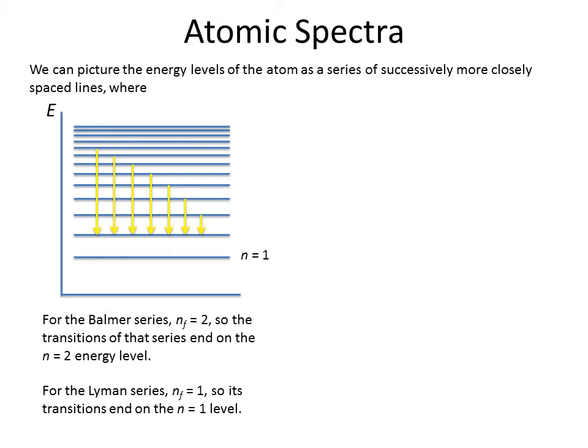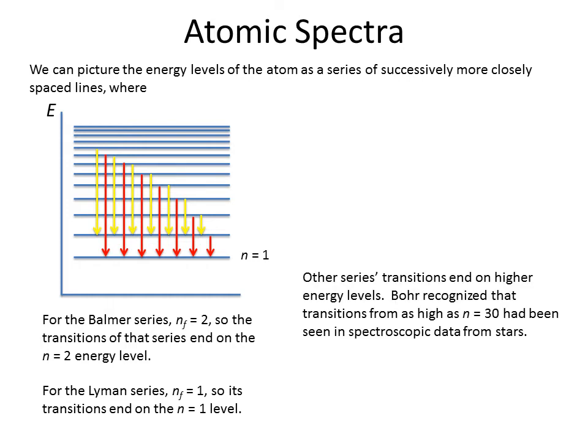Well, the Lyman series is to the n equal 1. It has a similar pattern. We just call it a different thing. And each of these are named after, for the hydrogen atom at least, they're named after famous people who kind of discovered them. Well, Niels Bohr was the one who really recognized this type of pattern. We've seen transitions up from as high as n equal 30. This is what we can see. Why we can determine composition of stars is because we can see what energies of these photons we're getting out.